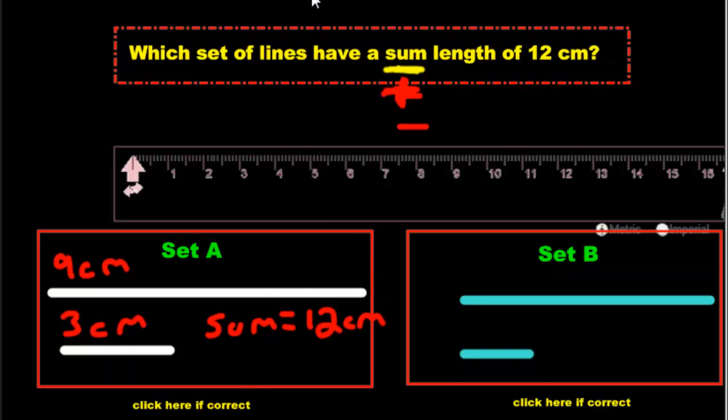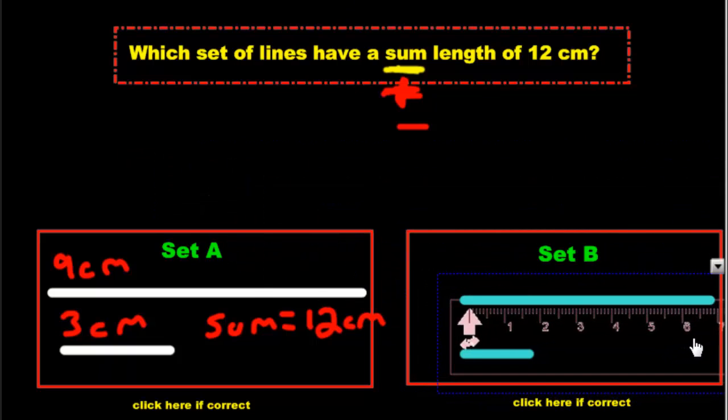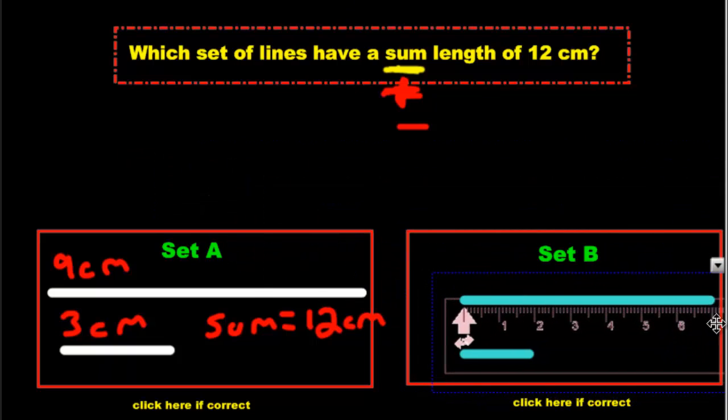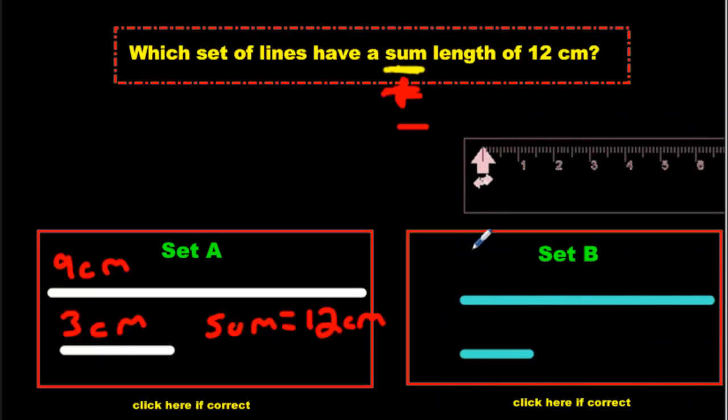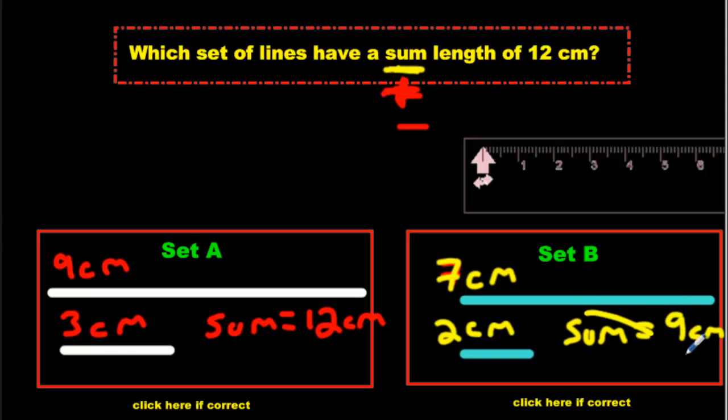But just to make sure, let's double check with the second one. Make sure it doesn't also work. Maybe they both work. That looks to be like it's about 7. And the bottom one looks to be about 2. So we'll write 7 and 2. We're going to write 7. But we're going to do it in yellow. We're going to go 7. And we're going to write 2. And the sum of 7 and 2, what is it? It's 9 centimeters. Which is not what we're looking for. So we got our answer.